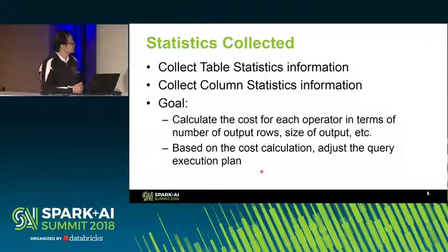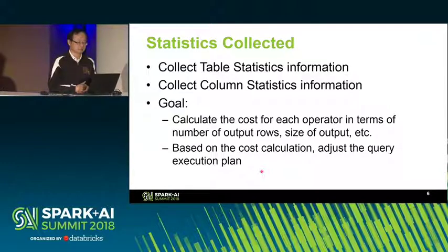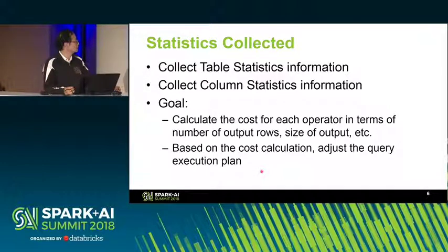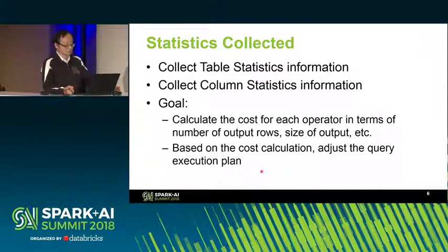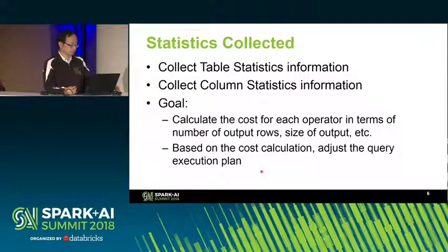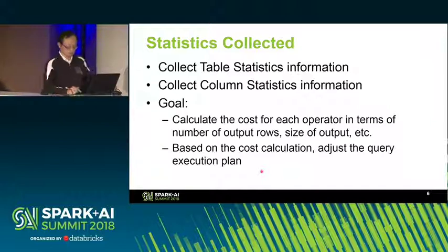As for the statistics we collect, it contains both table-level statistics and column-level statistics. The goal is to compute the cost for each operator. The cost is based on the number of output records — we call it cardinality — and also the size of the output. Based on the cost calculation, we try to adjust the query execution plan.